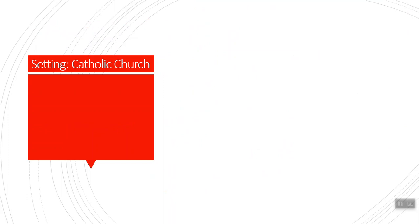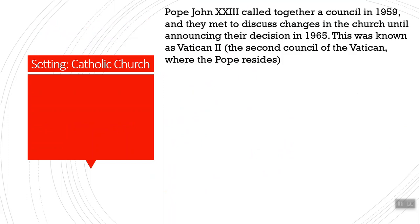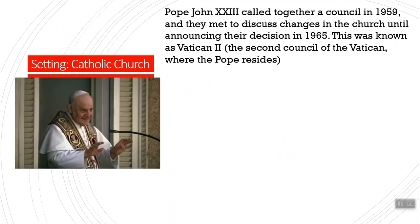At that same point, the Catholic Church is going through changes of its own. Pope John XXIII called together a council in 1959. They met to discuss changes in the church, meeting for a number of years at various points, consulting with smaller committees at different churches, talking to bishops, priests, and cardinals. What they decided to do was make some changes — this was known as the Vatican II Council, the Second Council of the Vatican.